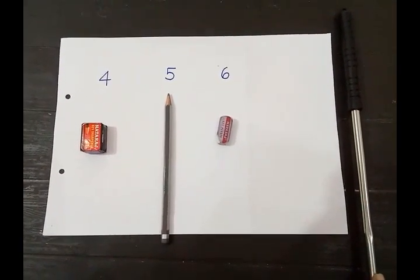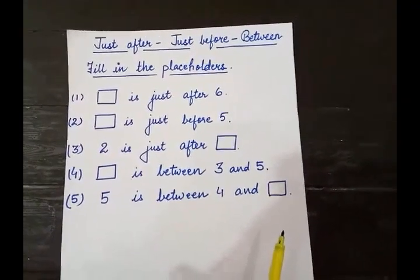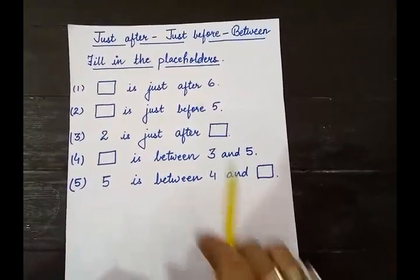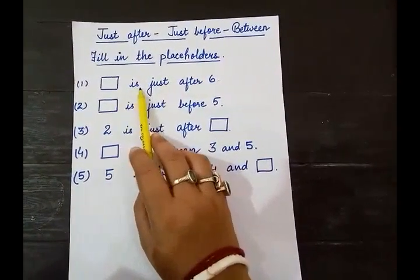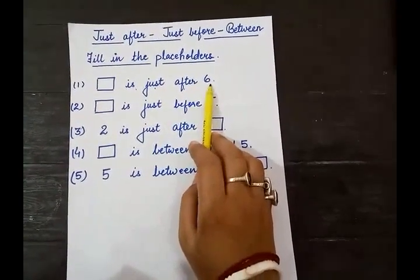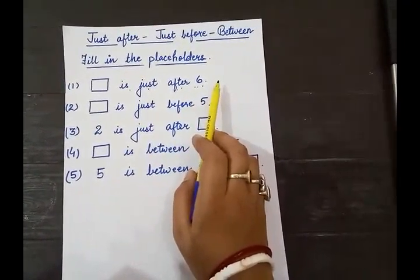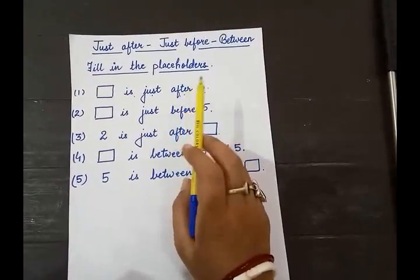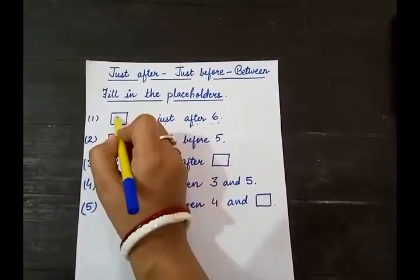Now we will come to the exercises. I will solve a few examples so that you can solve the book exercises also. Fill in the placeholders. Dash is just after 6. After means baad mein — after 6, count the numbers: 1, 2, 3, 4, 5, 6, 7. Just after 6, which number is there? 7.